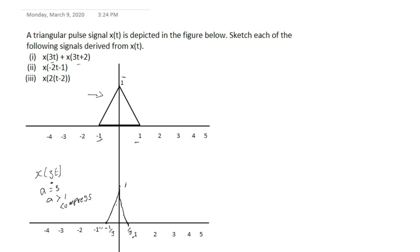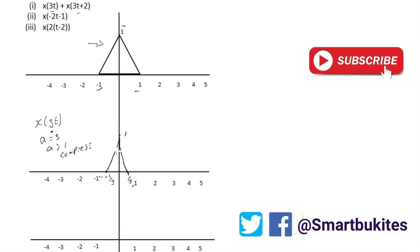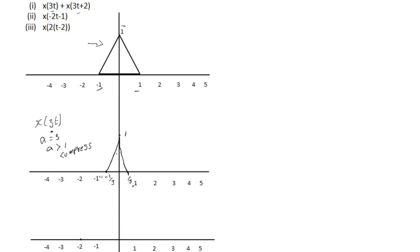We can now draw our signal. We have our scaled signal X(3t) which has been compressed. Next, we look at X(3t+2).